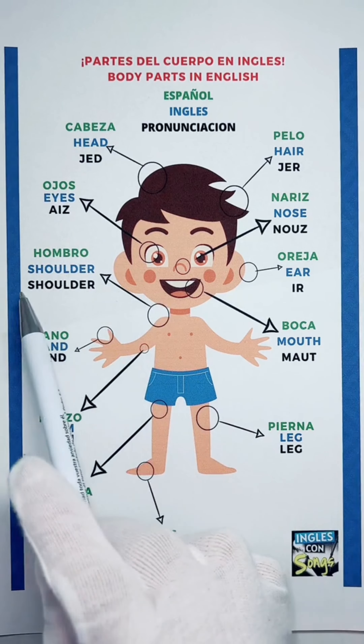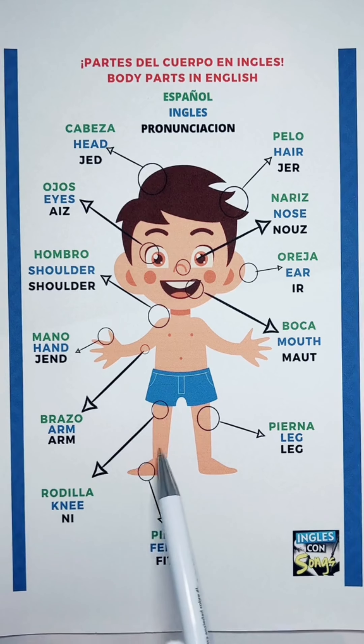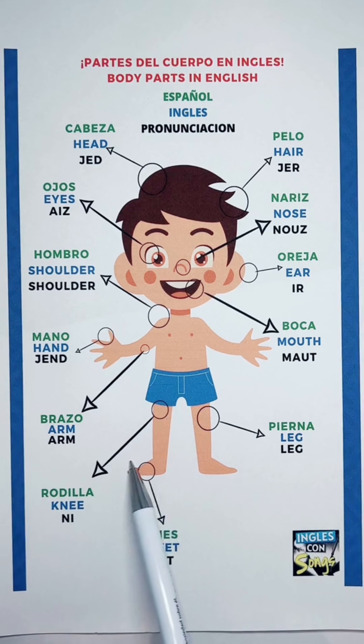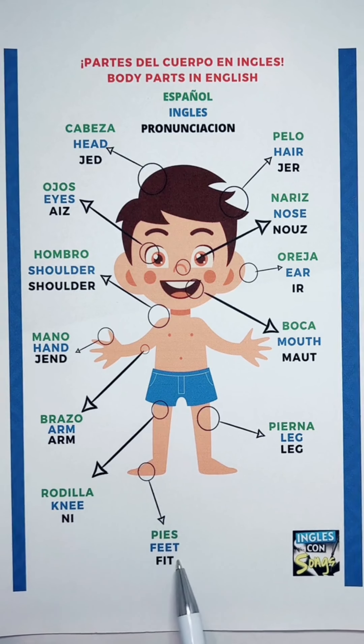Brazo — Arm. Rodilla — Knee. Pies — Feet.